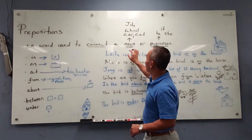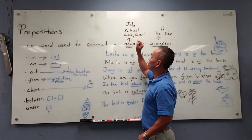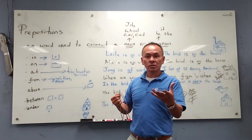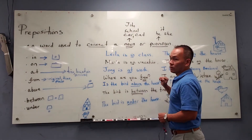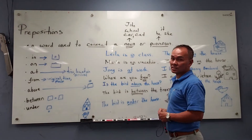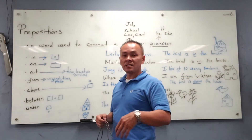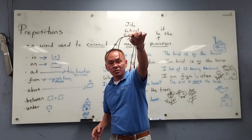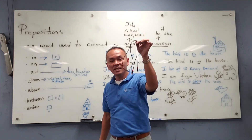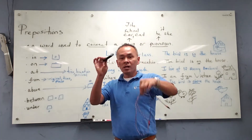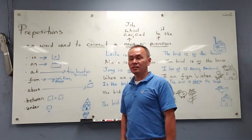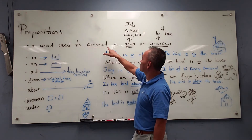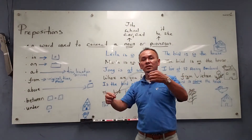A preposition connects to a noun or a pronoun. For example, a noun is John, school, car, or cat. I like apples — apples are nouns. A pronoun: he, she, or it. John is he. Maria is she. This charger is not a person, so we say it. The wallet is it. So again, a preposition is a word used to connect a noun or pronoun — it's like a connection.